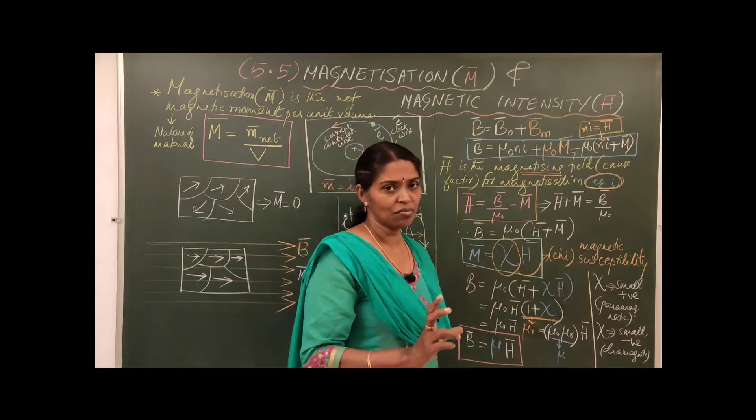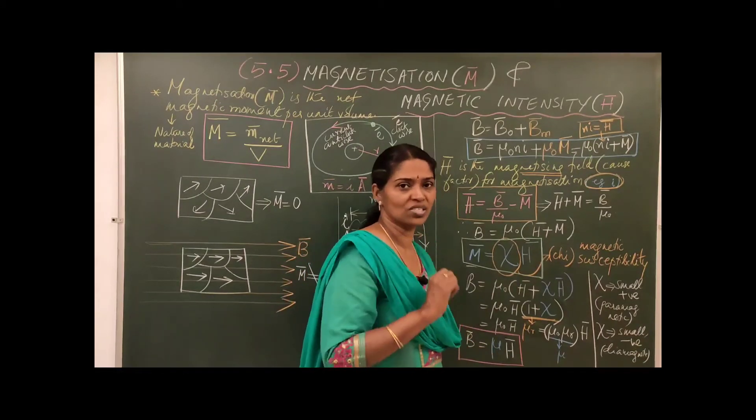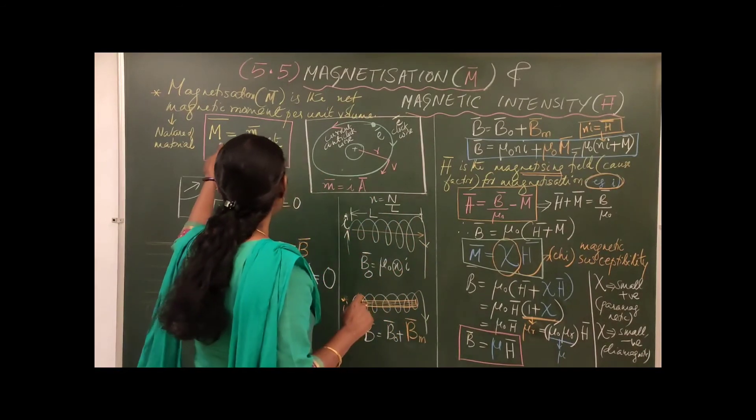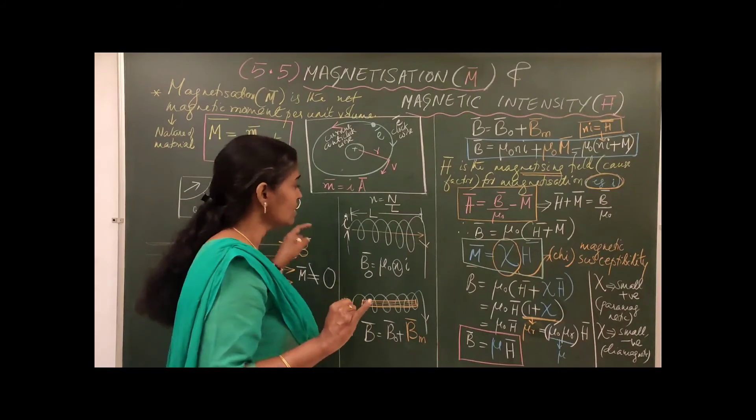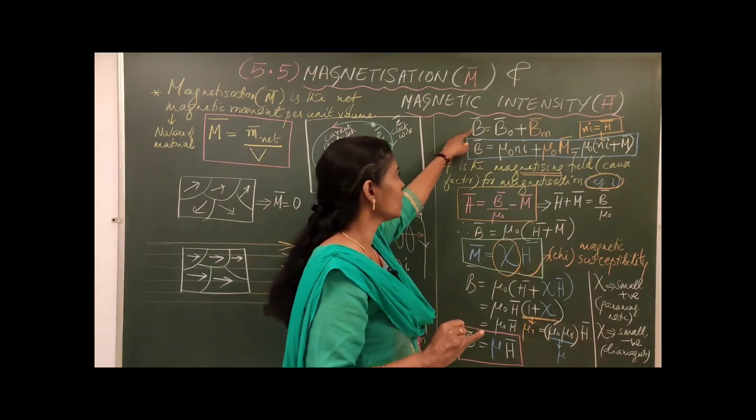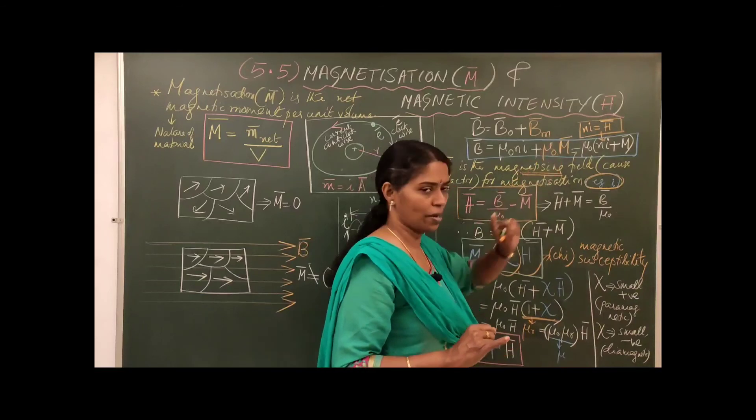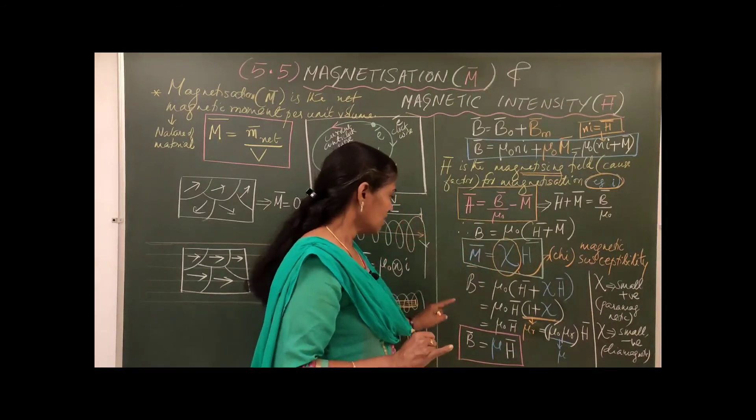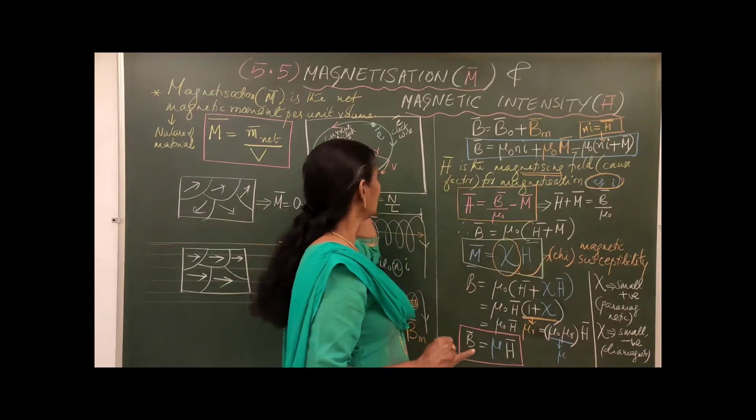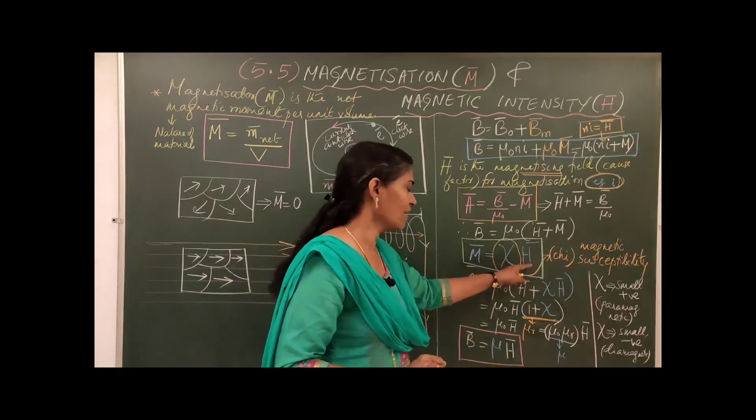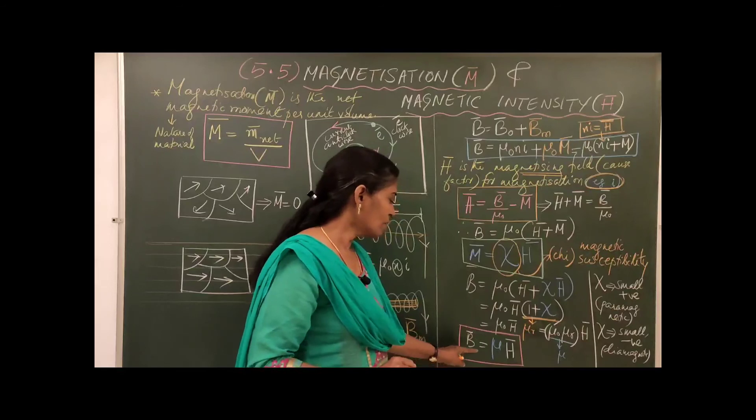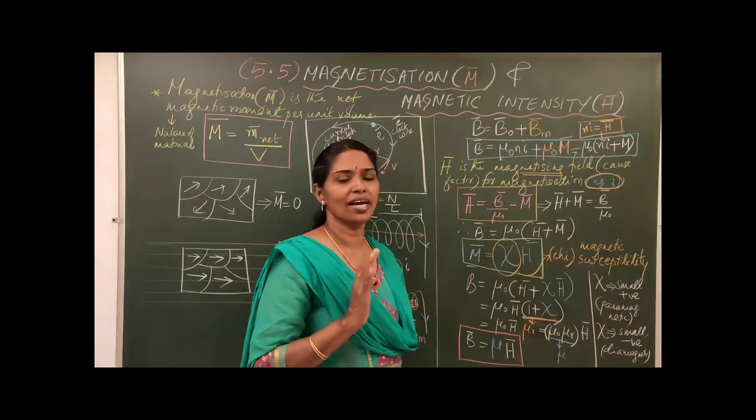So we have to memorize at least three equations. Number one: M bar equal to M bar net by V, one equation. The other one: B bar equal to mu zero N I plus mu zero M bar. And the third and final, one, two, three, four: M bar equal to chi H bar. And last one, B bar equal to mu H bar.